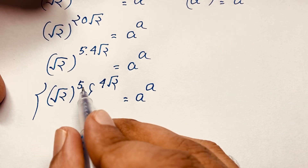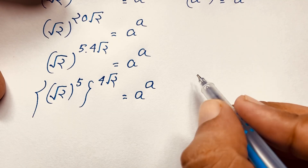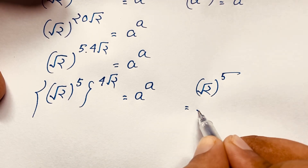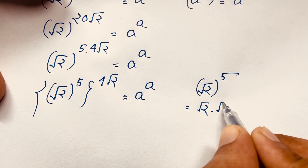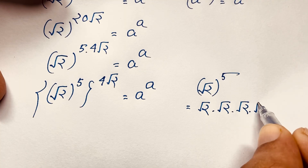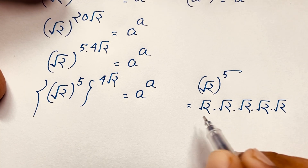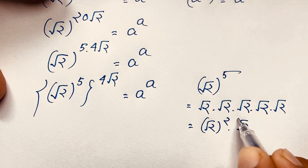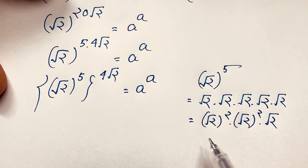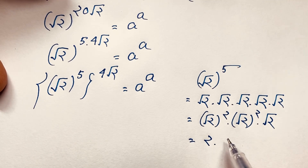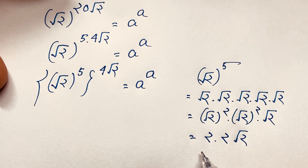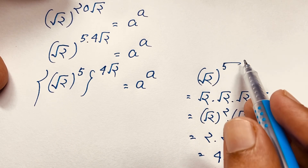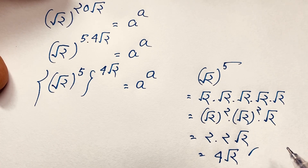Now, (√2)^5 equals what? To simplify this radical expression, (√2)^5 means (√2)^2 times (√2)^2 times √2. Each (√2)^2 equals 2, so 2 times 2 equals 4, and the remaining √2 stays. Therefore (√2)^5 equals 4√2.